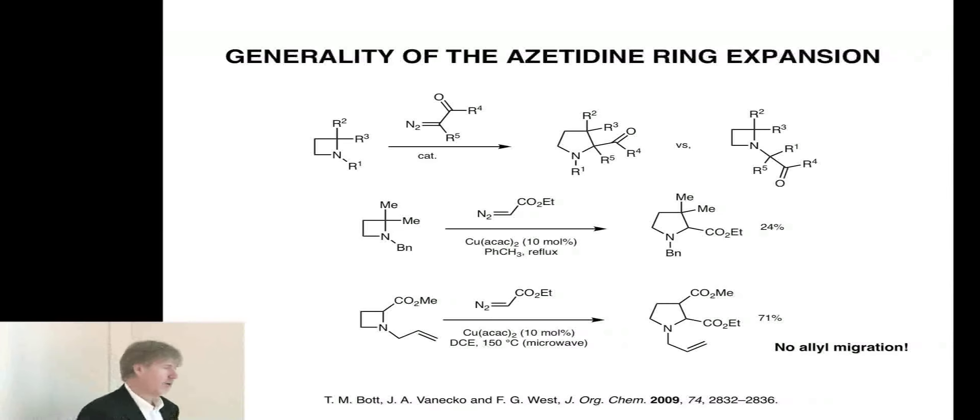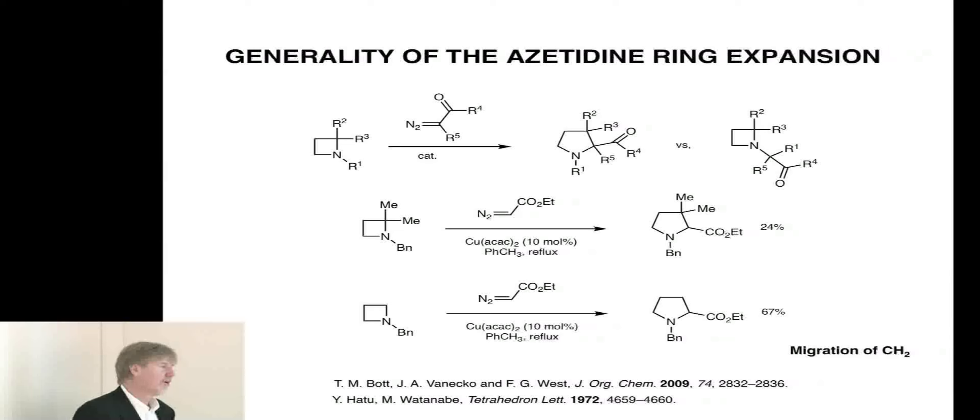And now, here's the craziest one of all. Here is an azetidine with nothing on the carbons of the ring. It still has an N-benzyl group. With ethyl diazoacetate and copper acac, our only product in pretty good yield is this proline derivative, where we've ring expanded by way of a simple CH2 that lacks any stabilizing group. And still, no benzyl migration. I should point out that a very similar reaction using a different catalyst system was reported way back in the early 70s by Hattu and Watanabe. They reported a similar result. This really suggests that there's something special about these strained rings in terms of dominating the migratory aptitude.